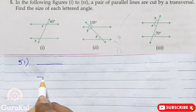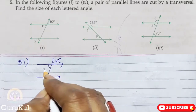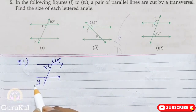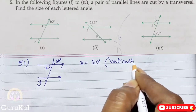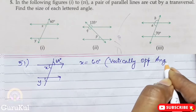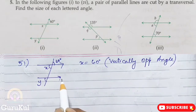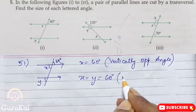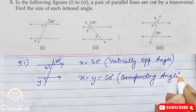The first figure shows two parallel lines cut by a transversal. The given angle is 60 degrees, and we need to find x and y. So x is equal to 60 degrees — reason: vertically opposite angle. Then x is equal to y because they are corresponding angles formed by a transversal cutting parallel lines. Therefore x = y = 60 degrees, reason: corresponding angle.